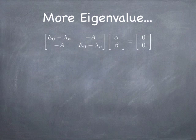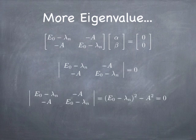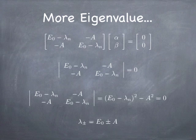To find the eigenvalues, we apply Kramer's rule: solving for α or β involves dividing zero by the determinant of the matrix, and we can only get a finite non-trivial result if that determinant is also zero. So we require the determinant of (H − λI) to be zero. This gives a quadratic algebraic equation for λ with two solutions: λ₊ = E₀ + A and λ₋ = E₀ − A. These are the two energy eigenvalues of the system—a low-energy version E₀ − A and a high-energy version E₀ + A.